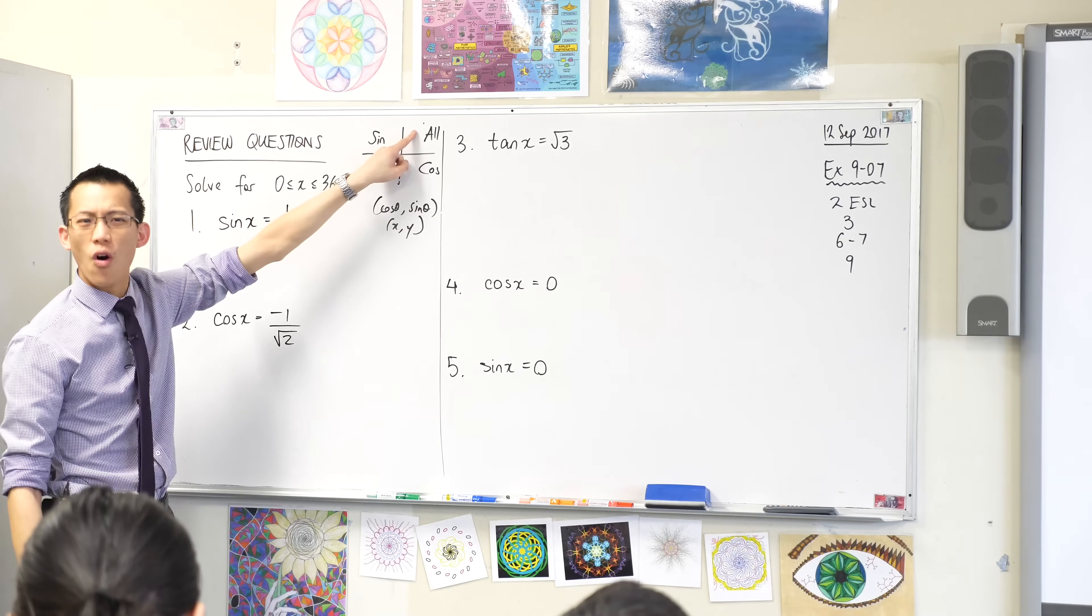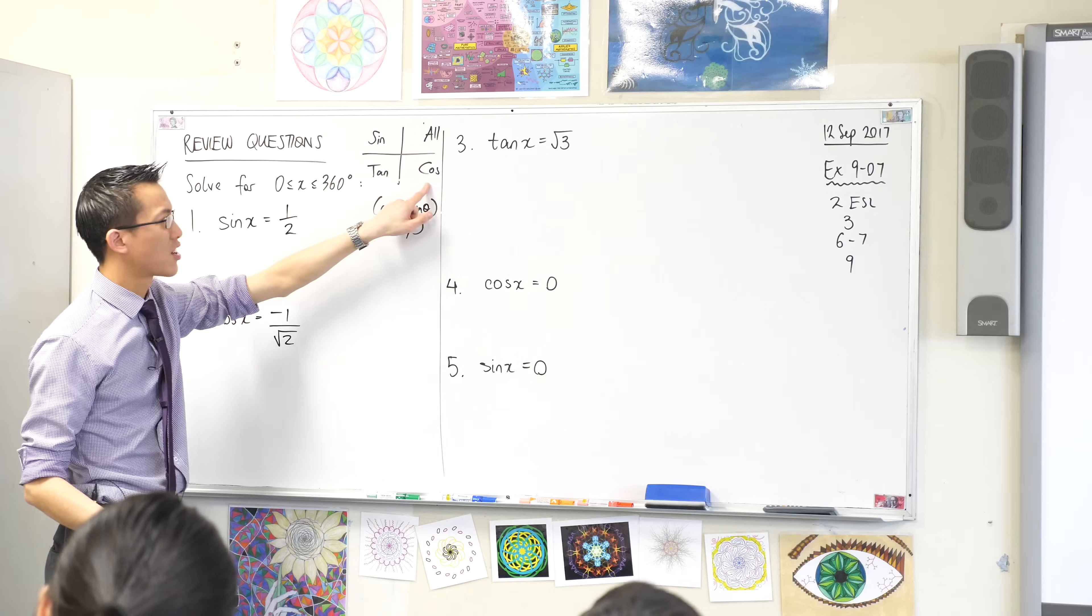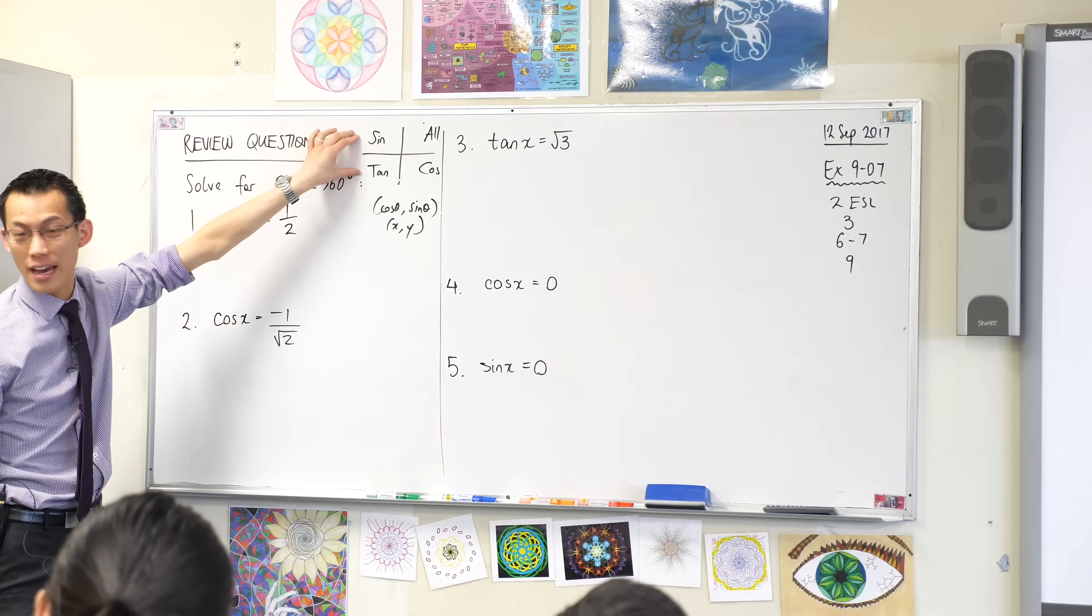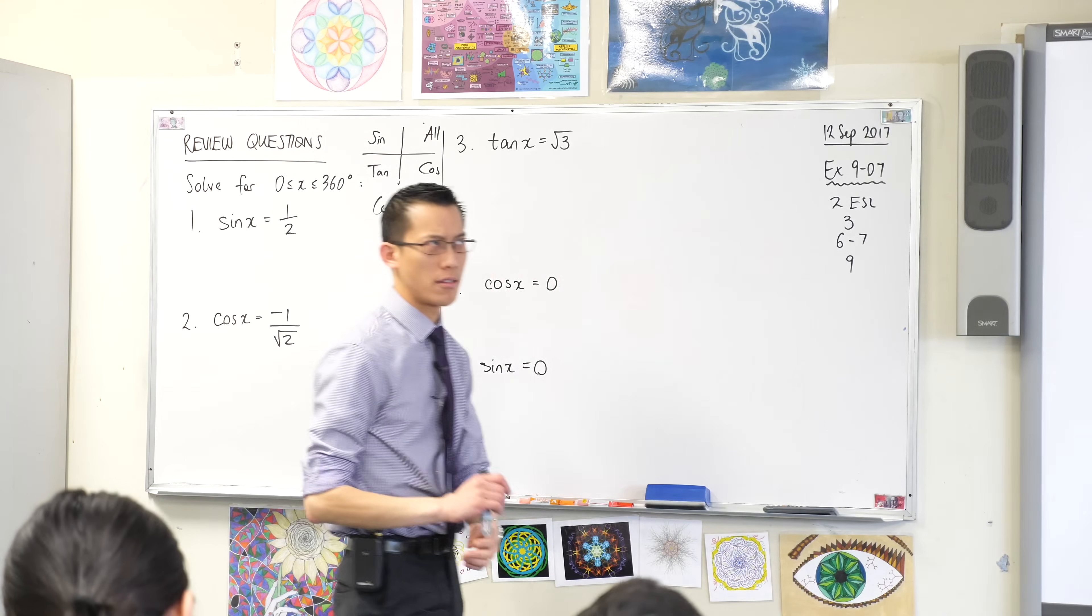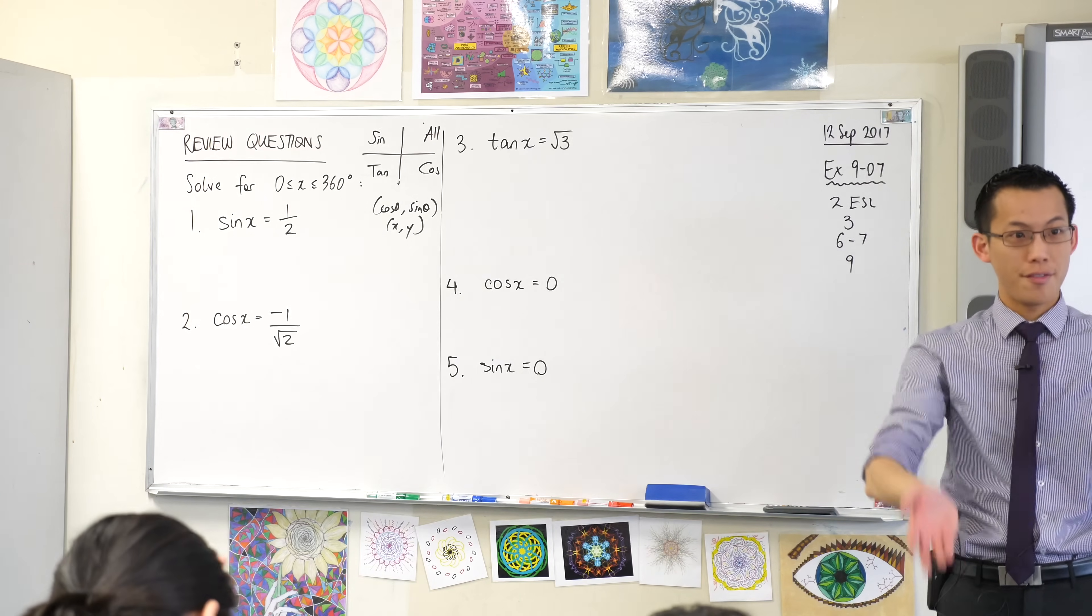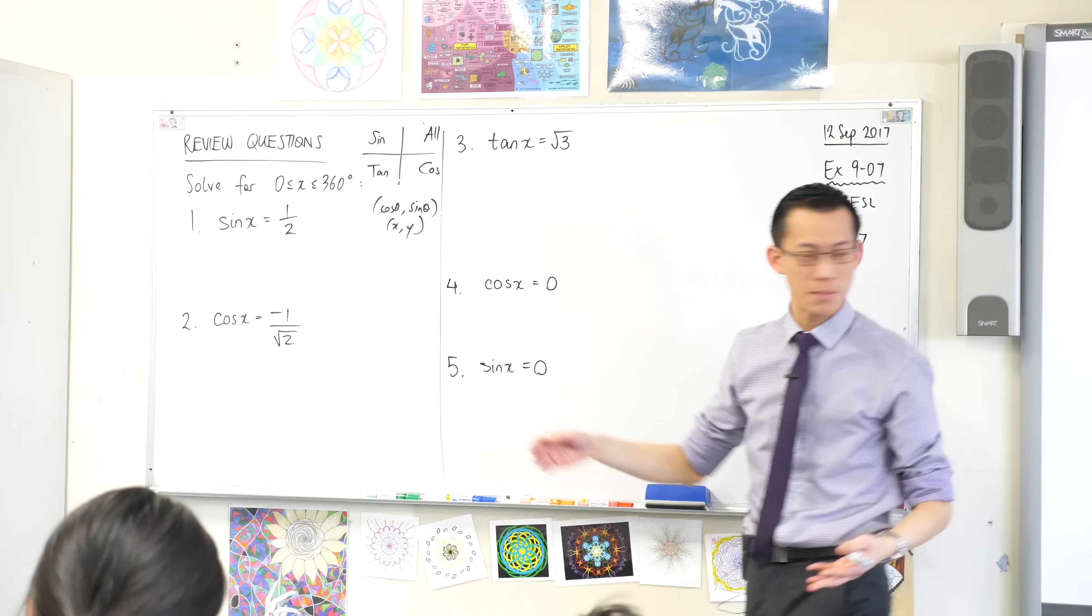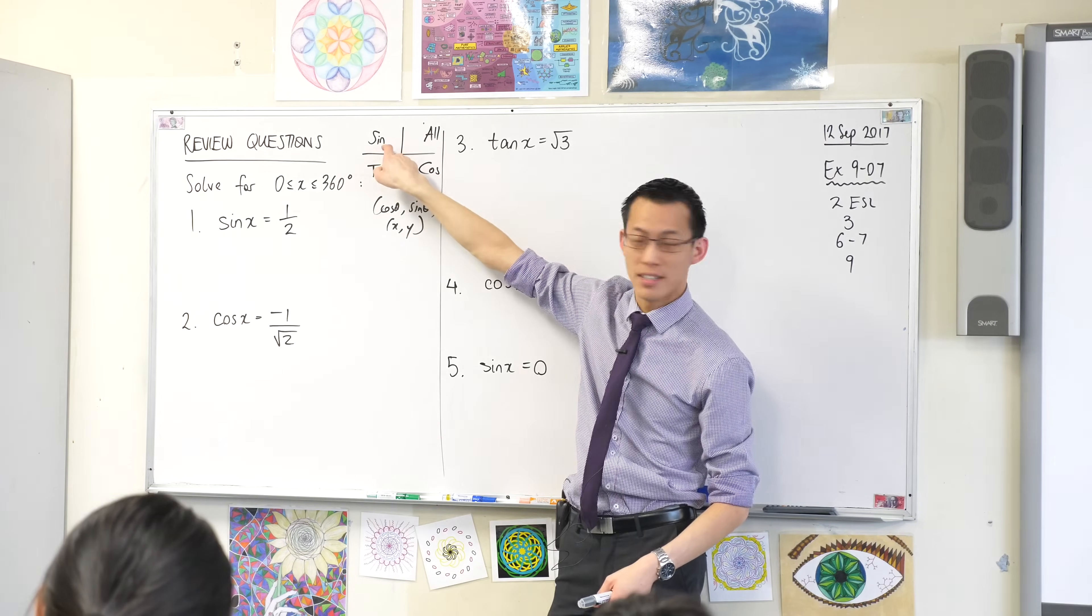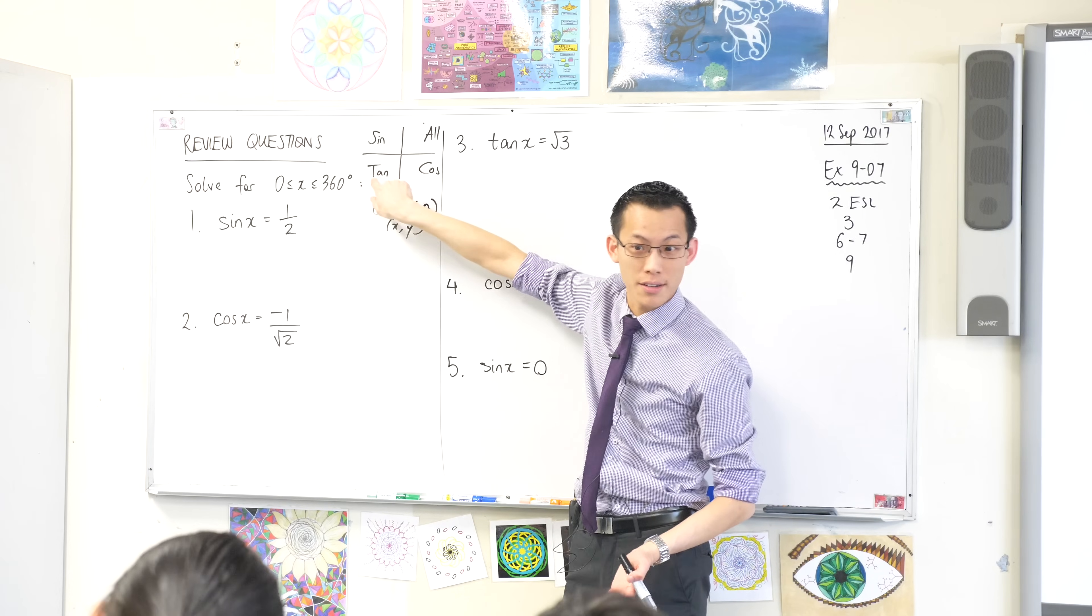So that's why you see all of the trig functions, trig ratios, sine, cos and tan, they're all positive here. Cos is also positive on this side. Cos is negative on this side. That's why you don't see cos up here, okay? Now think about sine. Sine is the y coordinate, right? So that means above the x axis, sine is positive. Does that make sense? Because the y values are positive. That's why sine is positive here and here. But it's not here or here. That's why you don't see sine here and here, okay?